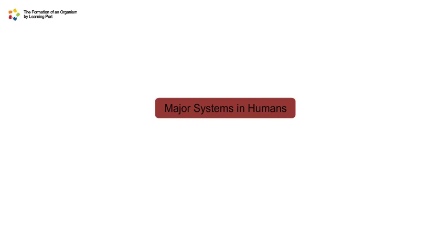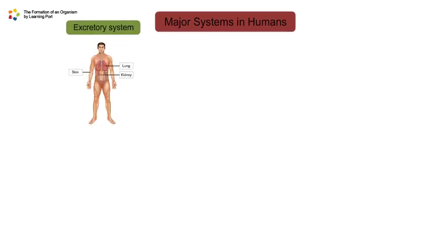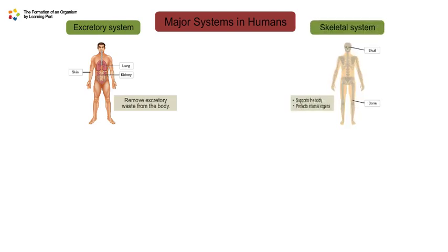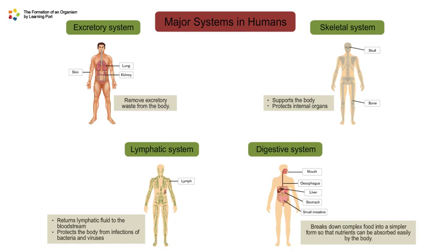There are 11 major systems which carry out major body functions in humans. The excretory system removes excretory waste from the body. The skeletal system supports the body and protects internal organs. The lymphatic system returns lymphatic fluid to the bloodstream and protects the body from infections of bacteria and viruses. The digestive system breaks down complex food into a simpler form so that nutrients can be absorbed easily by the body.